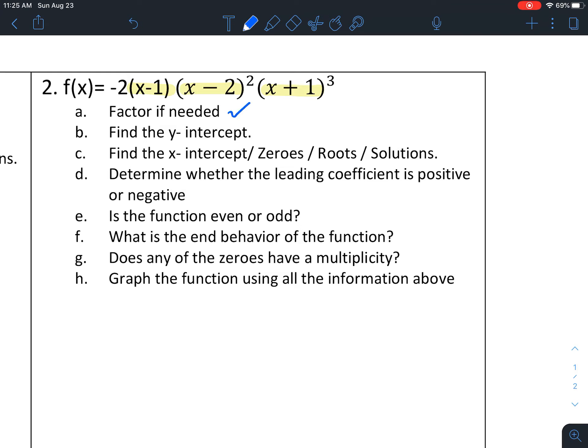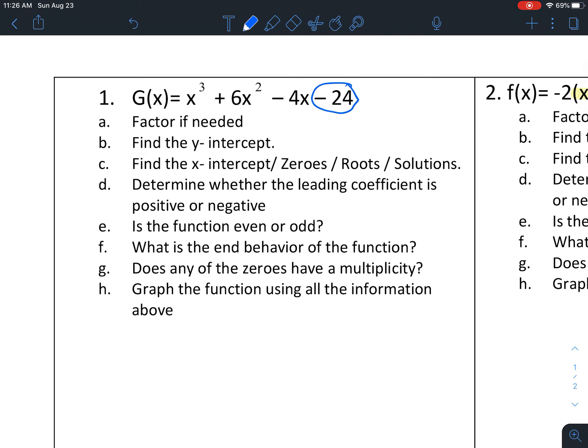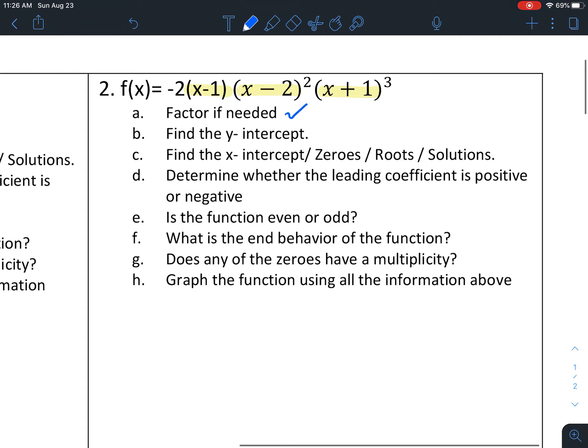When we look at the first step, factor if needed, it is factored. The second step is to find the y-intercept. When something is written in standard form, like number 1, we can see that the y-intercept is negative 24 because if we substitute 0 for all the x's, you are left with the last number.